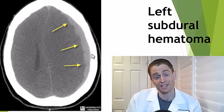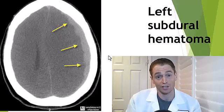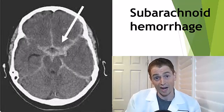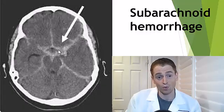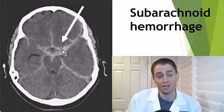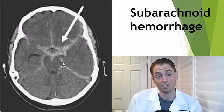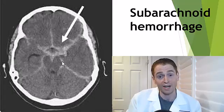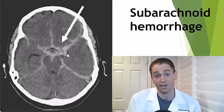If the subdural hematoma is large, as in this case, it could be treated with neurosurgical evacuation. Here is a subarachnoid hemorrhage where the blood occurs in the subarachnoid space under the arachnoid mater, a different part of the meninges. You can see blood filling up the suprasellar cistern and ambient cisterns around the midbrain. A subarachnoid hemorrhage of this type is usually the result of a ruptured brain aneurysm.